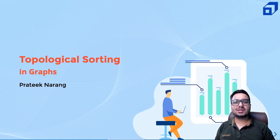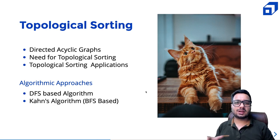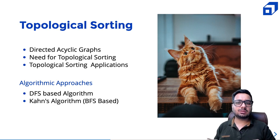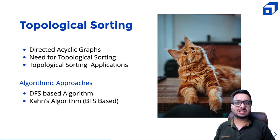Hello everyone, today's tutorial is about topological sorting on graphs, which is a very interesting and useful algorithm. First, we will discuss what is a directed acyclic graph and the concept and need for topological sorting. Later, we will dive into the applications of topological sorting and discuss two algorithmic approaches: a DFS-based approach and a BFS-based approach known as Khan's algorithm. We will also implement these two algorithms.